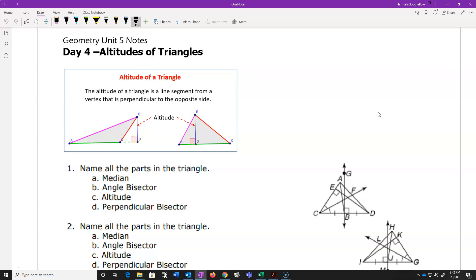So they happen to be the perpendicular bisector, the angle bisector, the median that we did yesterday, and now the altitude. This is the last one.